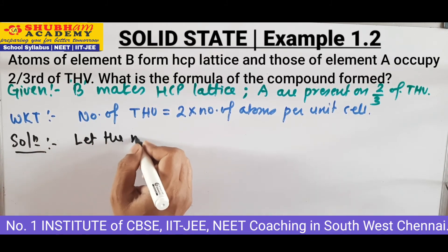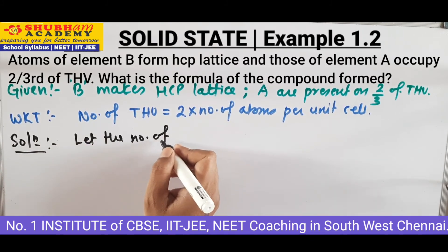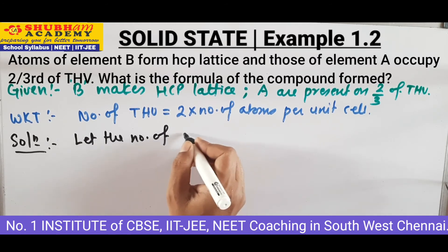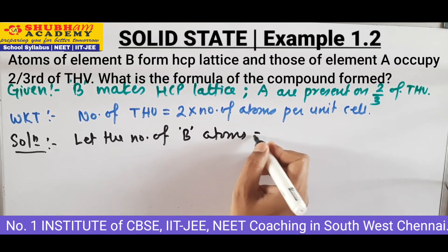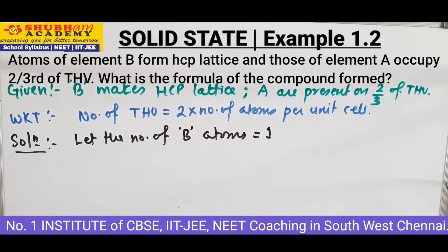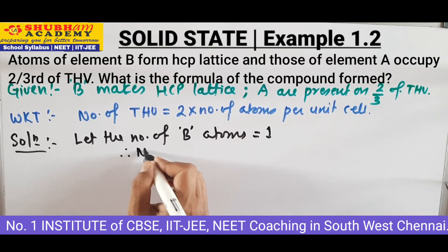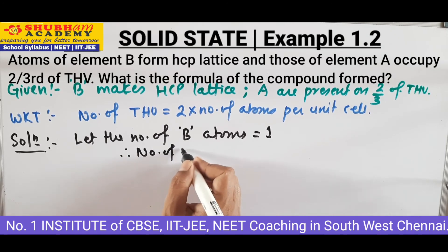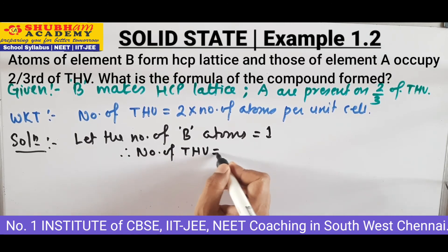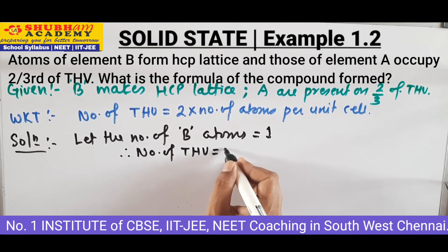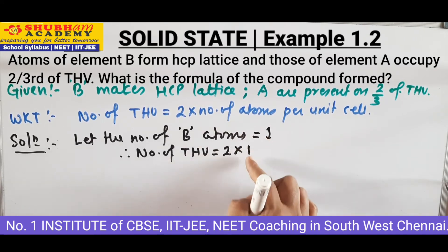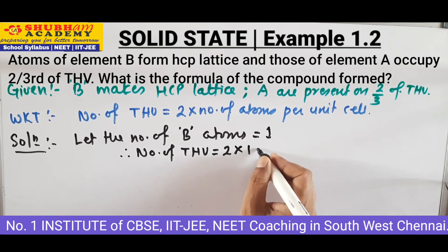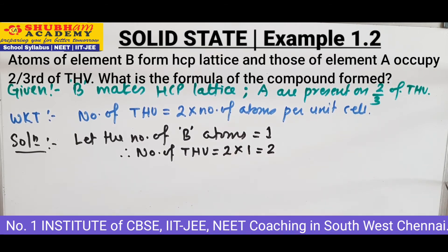Let the number of B atoms be equal to 1. Therefore, the number of tetrahedral voids will be 2 into 1, which equals 2. So the number of tetrahedral voids is equal to 2.